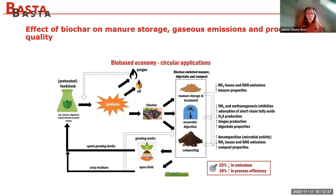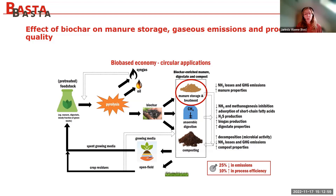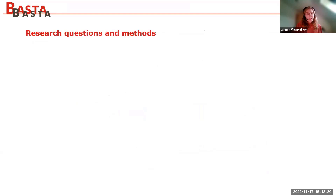Based on those screening tests, we selected some biochars with a high potential for nitrogen sorption and used them in manure storage, anaerobic digestion, and composting. The focus today is on manure storage and anaerobic digestion. We looked into the effects on storage but also on the quality of the manure, and also what the effect is when we add the manure to the soil again, because we don't want to postpone reduced emissions to soil application.